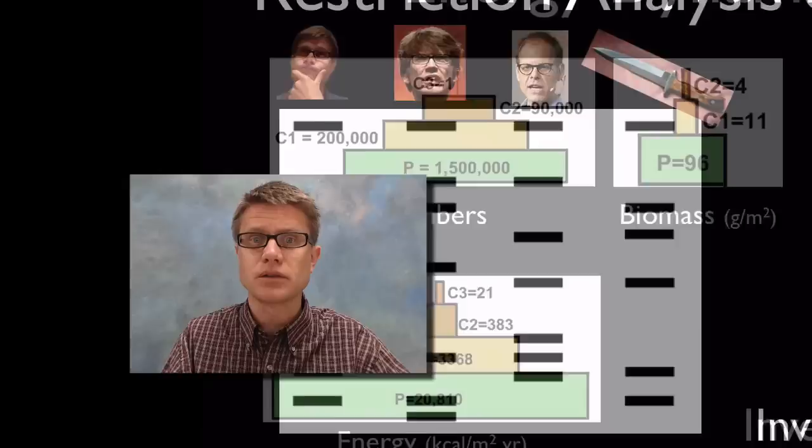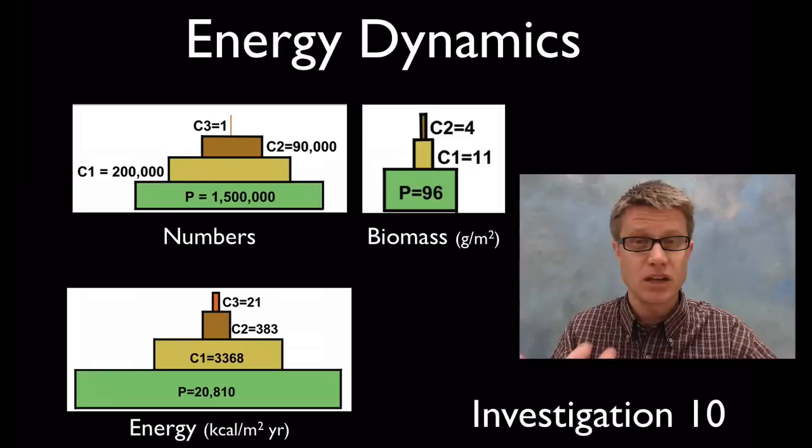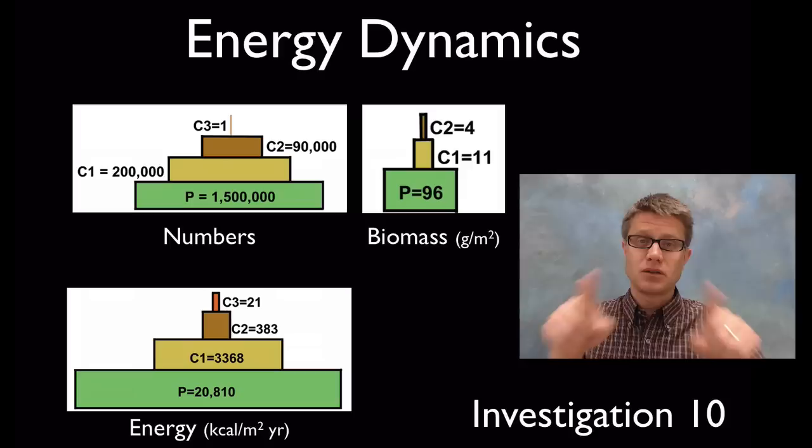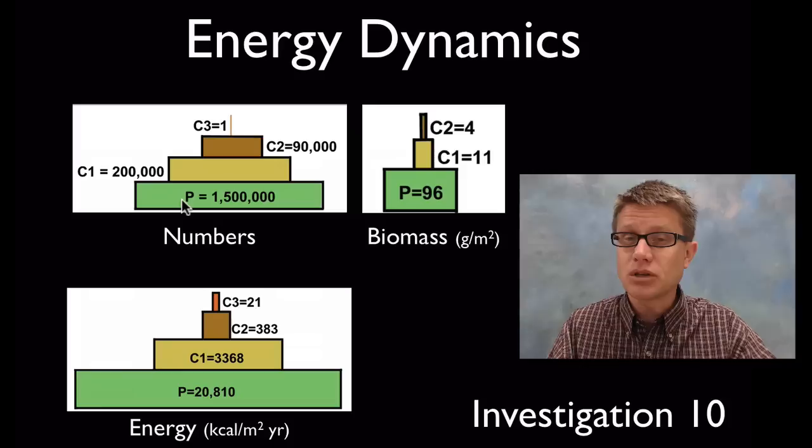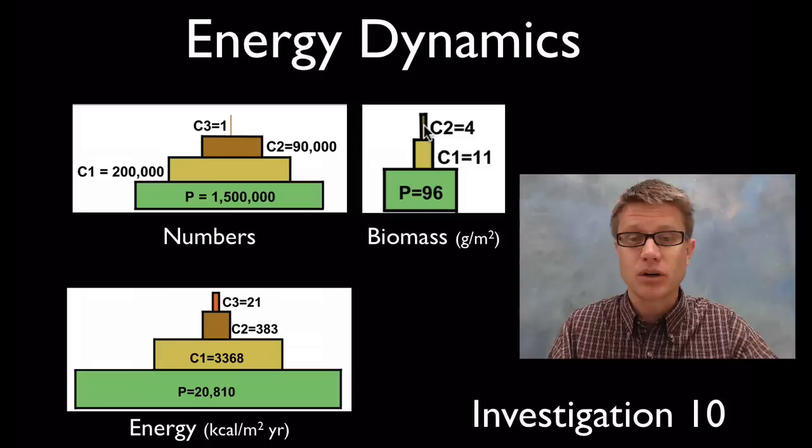Number ten is on energy dynamics. Energy dynamics is how numbers, biomass, and energy move in ecosystems. There's this idea of a pyramid: pyramid of energy, pyramid of numbers, pyramid of biomass. At the producer level, that's the plants, we're going to have more biomass. As we move up to the consumers we have less, and then less up here.